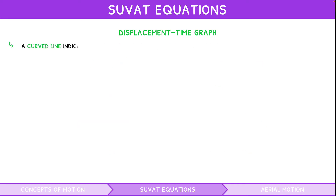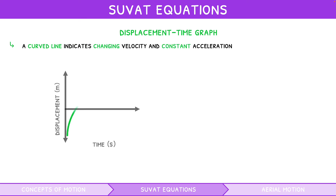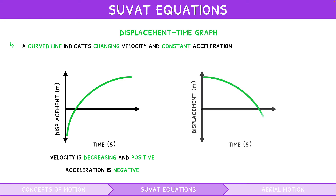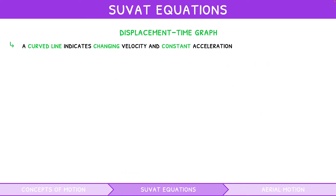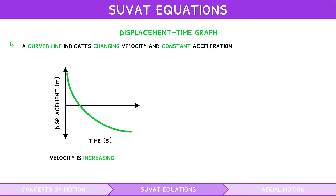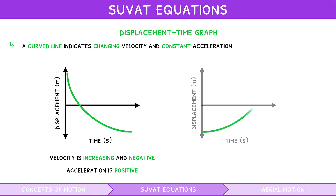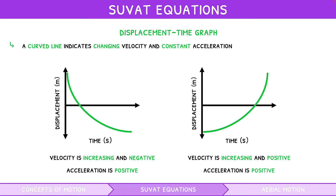A curved line on a displacement-time graph indicates changing velocity and constant acceleration. If it curves up at a decreasing rate, velocity is decreasing and positive, and acceleration is negative. If it curves down at an increasing rate, velocity is decreasing and negative, and acceleration is negative. At the plateau of both curves, velocity is zero. Examples include a ball thrown up in the air and falling back down. If it curves downwards at a decreasing rate, velocity is increasing and negative. If it curves up at an increasing rate, velocity is increasing and positive, and acceleration is positive. At the plateau of both curves, velocity is zero. Examples include a yoyo thrown downwards and coming back up, respectively.